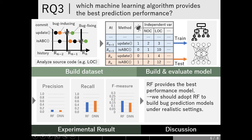RQ3: which machine learning algorithm provides the best prediction performance? The dataset building process and model building process are the same as RQ2. But in RQ3, we test random forest and deep neural network as learning algorithms to identify the most promising one. These graphs show the experimental results. We conclude that we should adapt random forest to build bug prediction models under realistic settings, because random forest provides the best performance model from the viewpoint of F-measure.